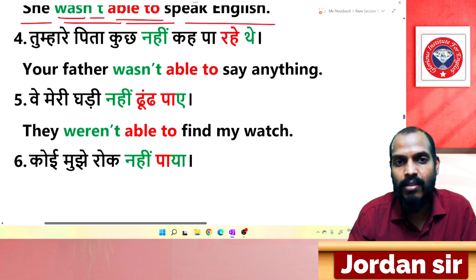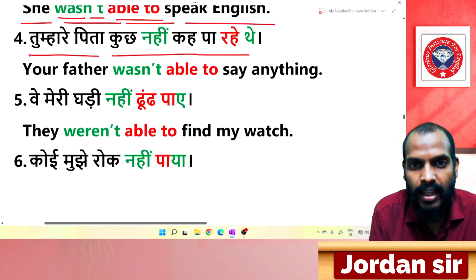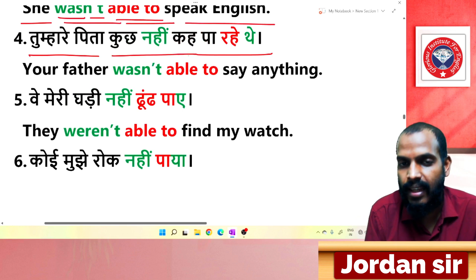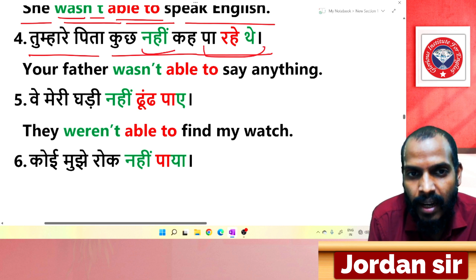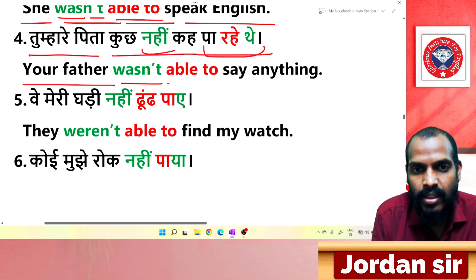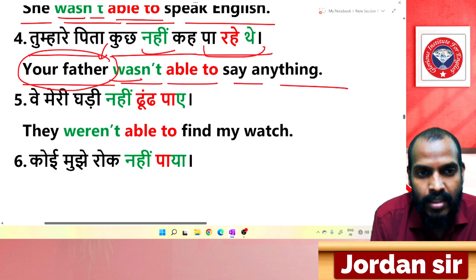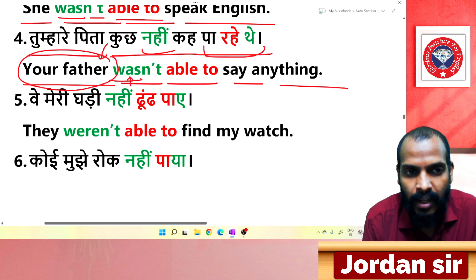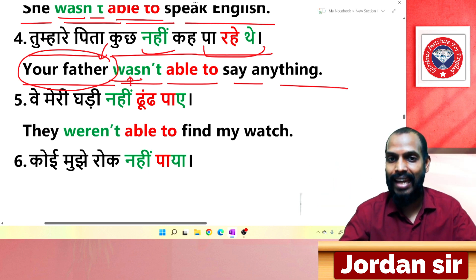Next: 'तुम्हारे पिता कुछ नहीं कह पा रहे थे.' The ending 'पा रहे थे' and 'नहीं' tell us it is negative. Translation: 'Your father wasn't able to say anything.' The subject 'your father' is singular, so 'was' is used — remember this.